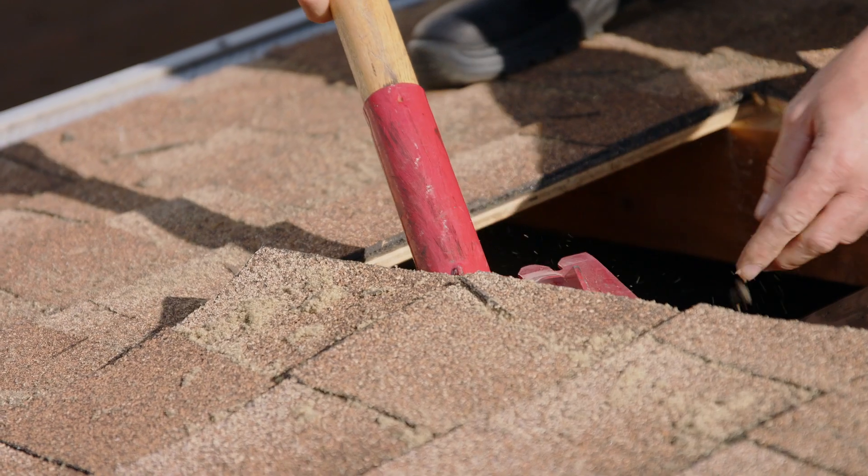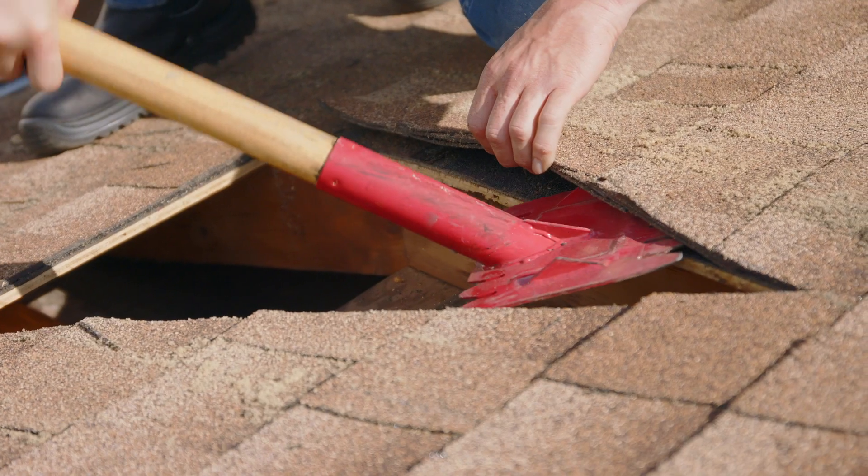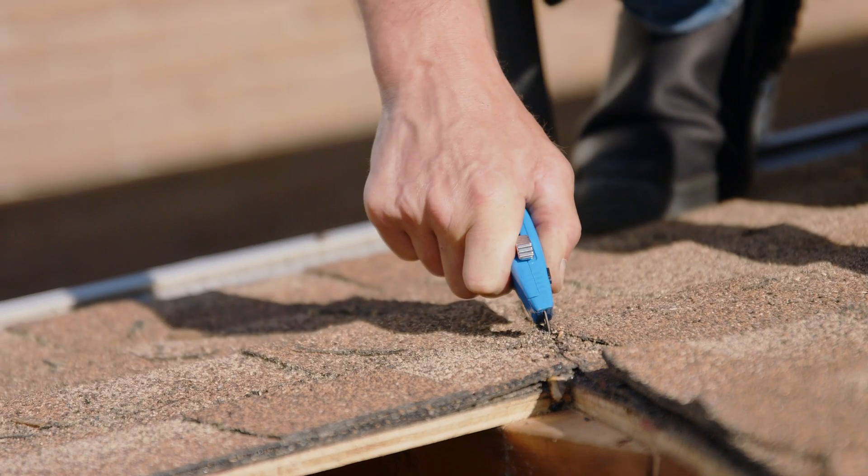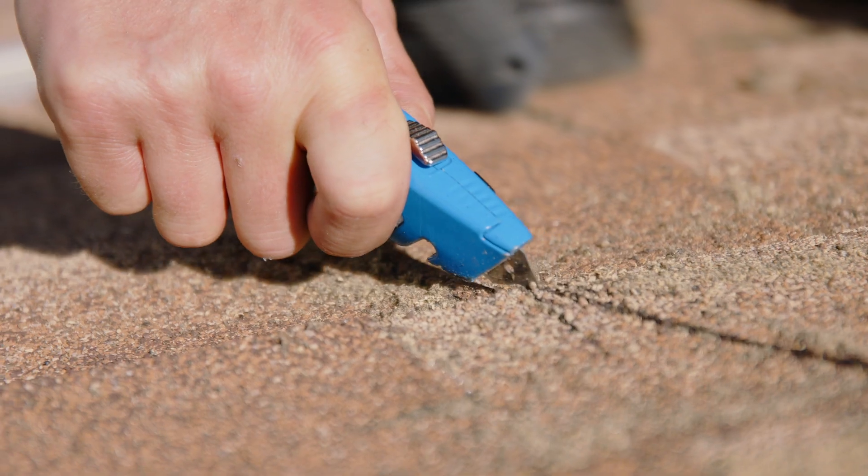With your shingles and wood cut, remove any of the remaining nails around the hole. Once that's done, continue your cut for two more rows of shingles. This will allow you to slide the vent up covering the flange.